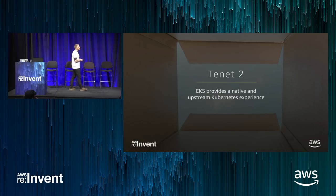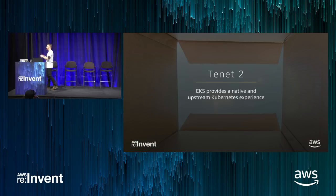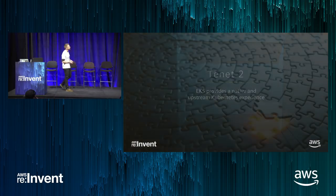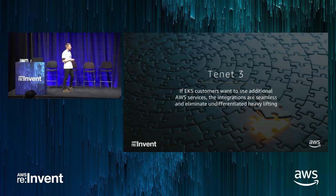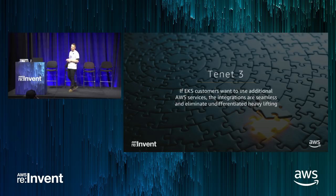Tenant two: EKS provides a native and upstream Kubernetes experience. Any modifications or improvements we make on the backend must be transparent to the Kubernetes end-user experience. We don't want you to have to think about anything unique to AWS if you don't want to. Your existing Kubernetes experience and know-how applies directly to EKS and all of your applications work directly out of the box. Tenant three: you are not forced to use any additional AWS services if you don't want to, but if you do, the integrations should be seamless and eliminate undifferentiated heavy lifting.